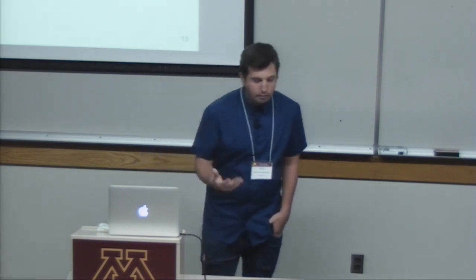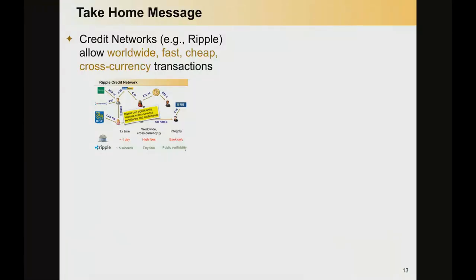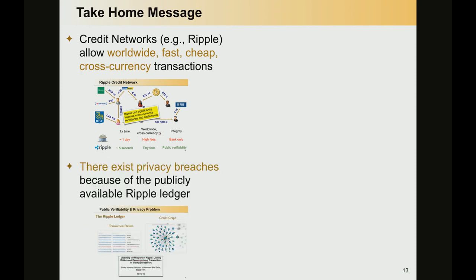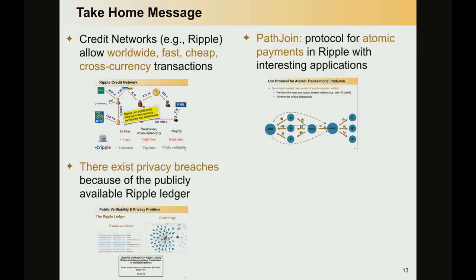Let me tell you the take-home message. Credit networks like Ripple or Stellar allow for worldwide, fast, cheap, and cross-currency transactions. However, there exist privacy concerns because of the publicly available Ripple ledger. Nevertheless, it is possible with PathJoin to perform atomic payments in the Ripple network, and we have seen how to leverage that to have anonymous payments, with potential for other applications as well.